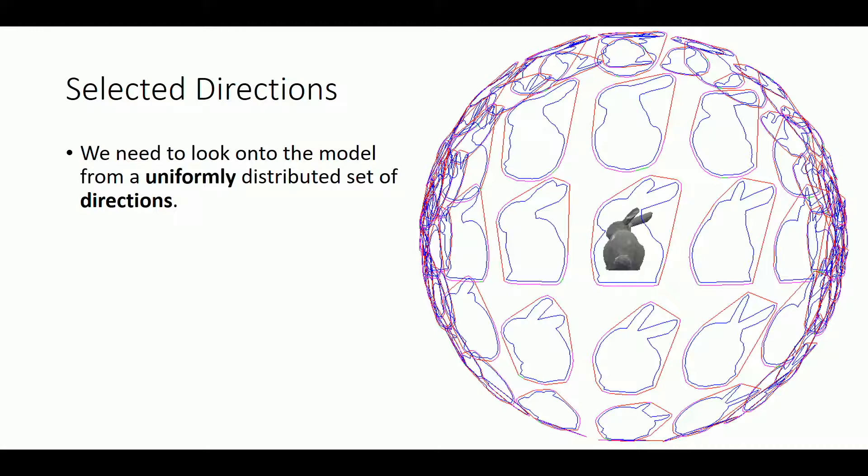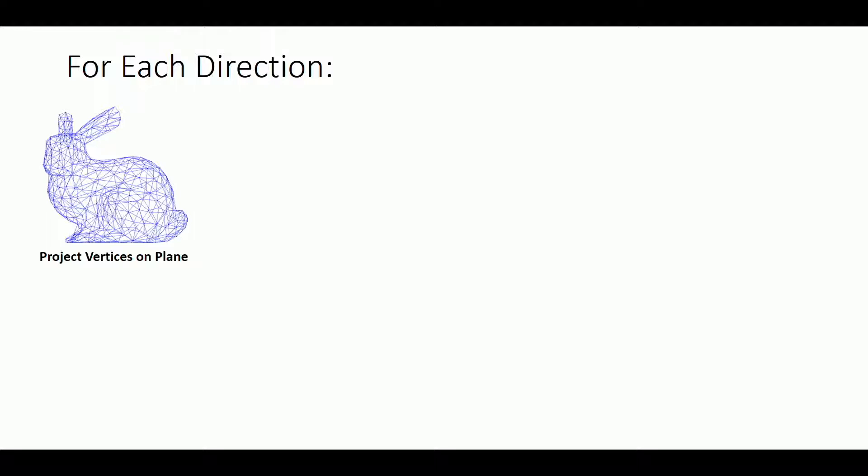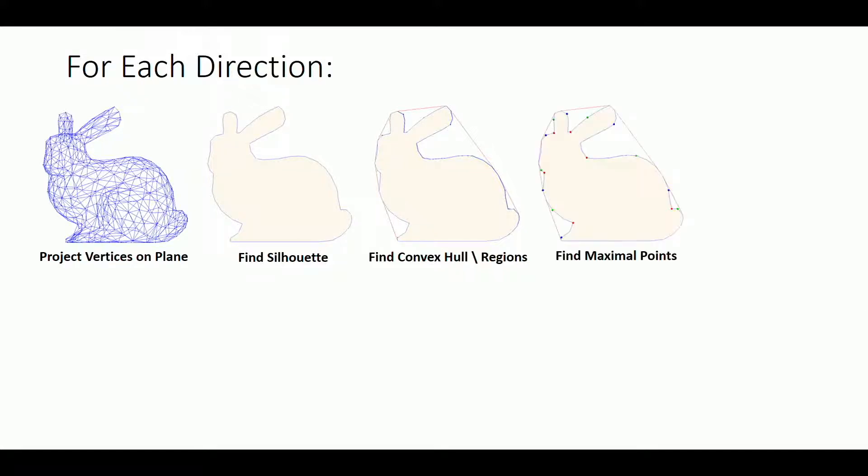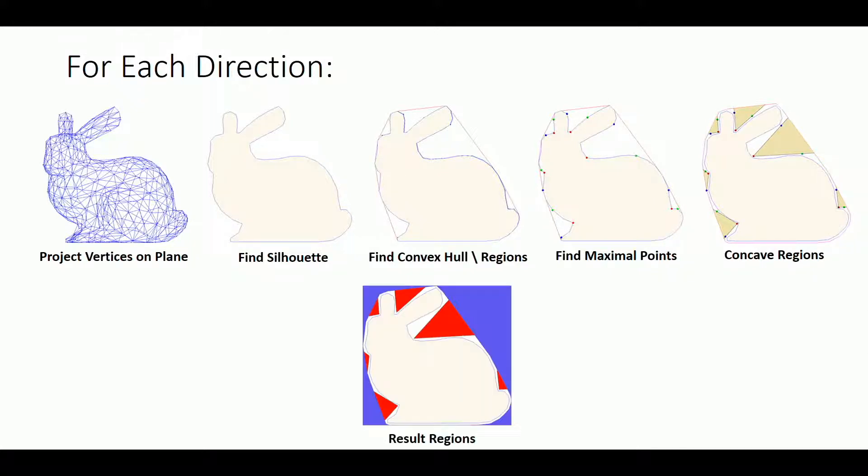To do that, we look to the model from a uniformly distributed set of directions. For each direction, we project the model vertices on a plane aligned with that direction. Then we find the silhouette of these vertices, then the convex hull of the silhouettes, and compute the concave regions.